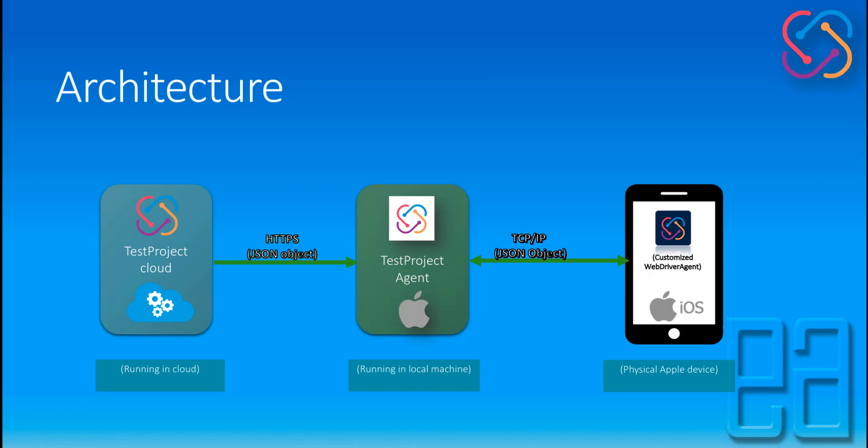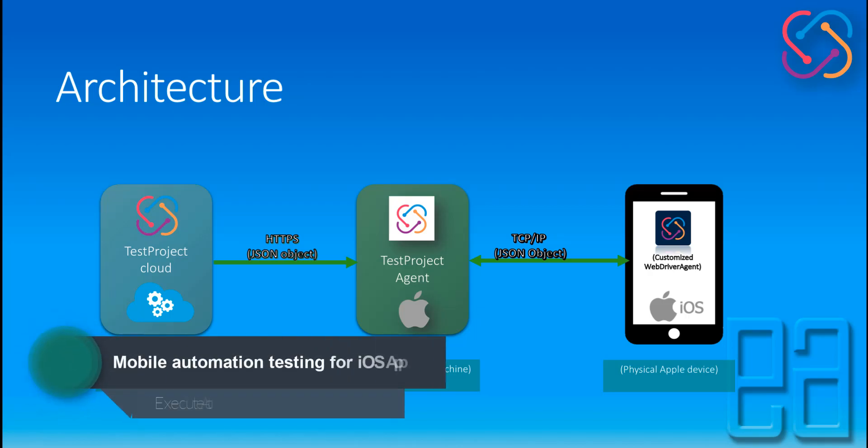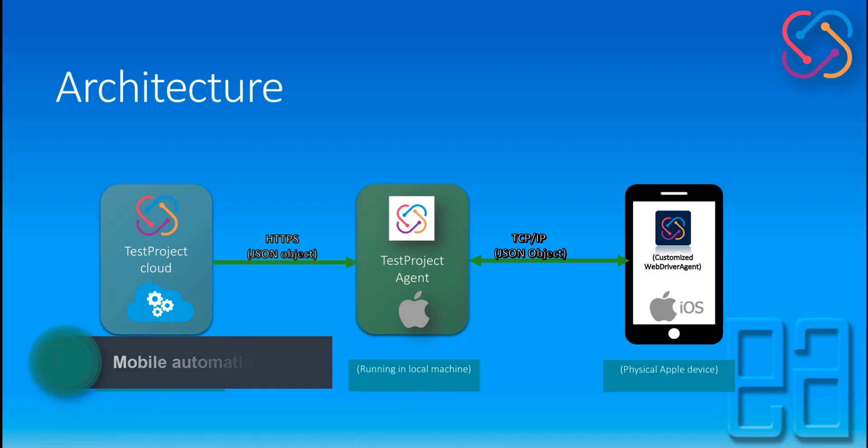In this case I have a local machine as a Mac operating system, and in this section I'll also show you how you can execute a test on an iOS device from a Windows operating system. This test agent takes the request from the test project cloud via HTTPS and then initiates the test on the connected devices. The test project agent knows which device is connected to itself.